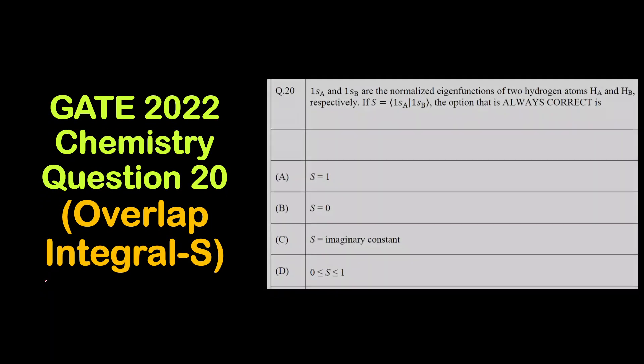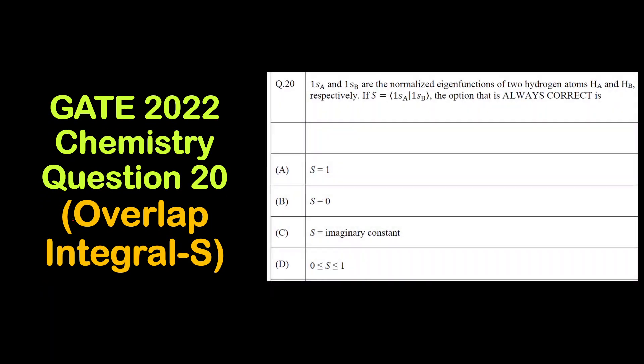Hello everyone, welcome to Chemazon Complete Chemistry. In today's video, we are going to solve question 20 of the GAY 2022 chemistry paper, which is based on the concept of overlap integral of quantum chemistry.